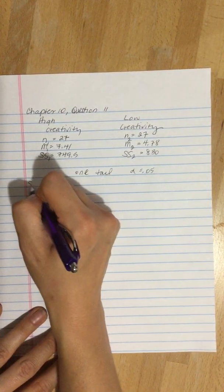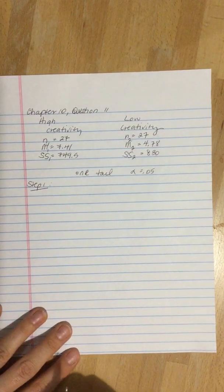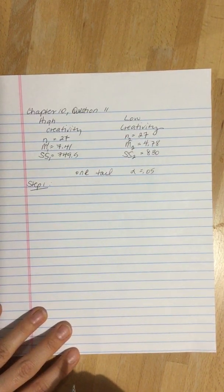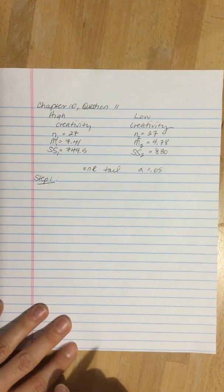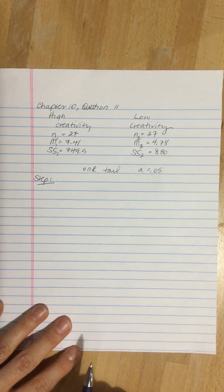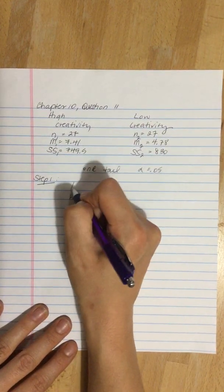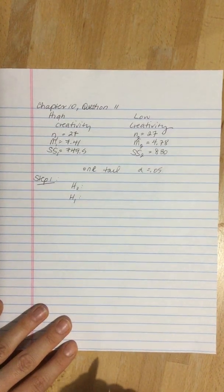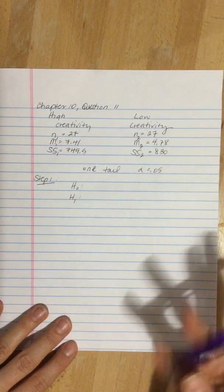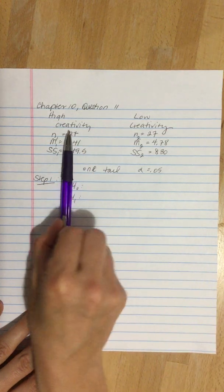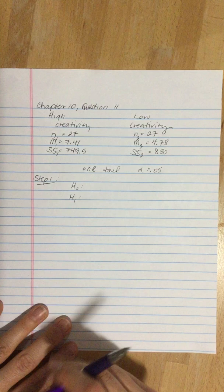Step one: what are our hypotheses? Well this time around we have a directional hypothesis. I'm going to have a one tailed hypothesis. It's often easier to start with your alternate and then figure out what your null is when you've got a directional hypothesis. So it is expected based on the question that high creativity people are going to have a higher score than low creativity people.